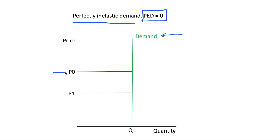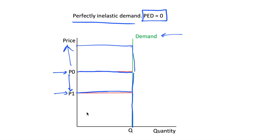Looking at it intuitively: at price P0 we demand quantity Q. If we decrease our price quite substantially to P1, we still demand Q. If we increase our price, we still demand Q. If we decrease further to P2, we are still demanding Q. No matter what we change the price to, we have the same quantity. Our demand is completely inelastic — completely unresponsive to changes in price. With perfectly inelastic demand, a change in price does not change quantity demanded.